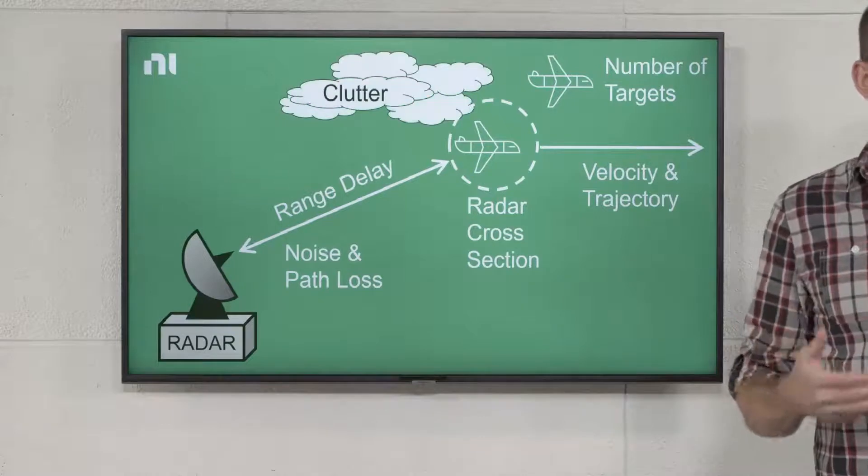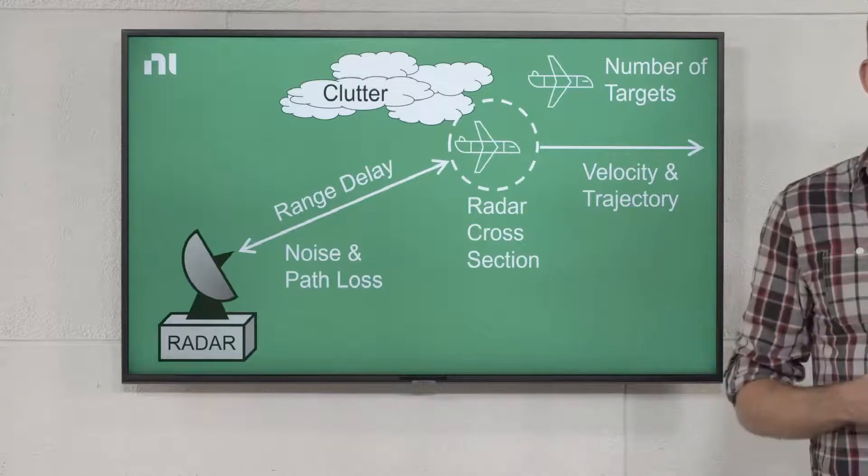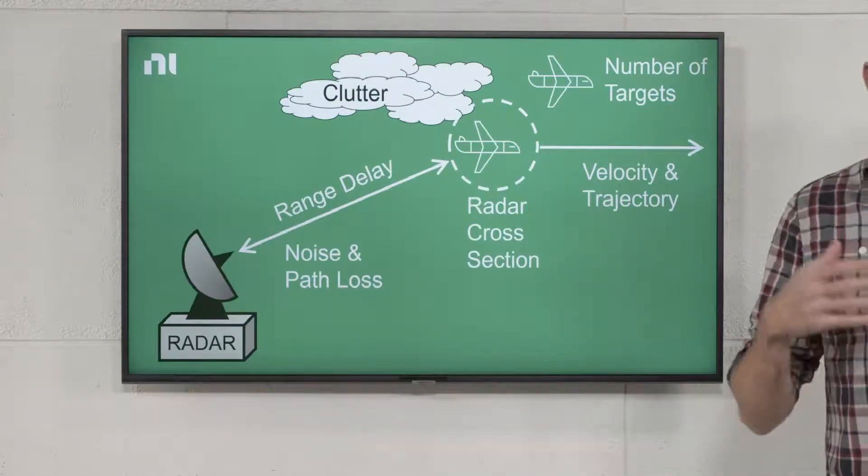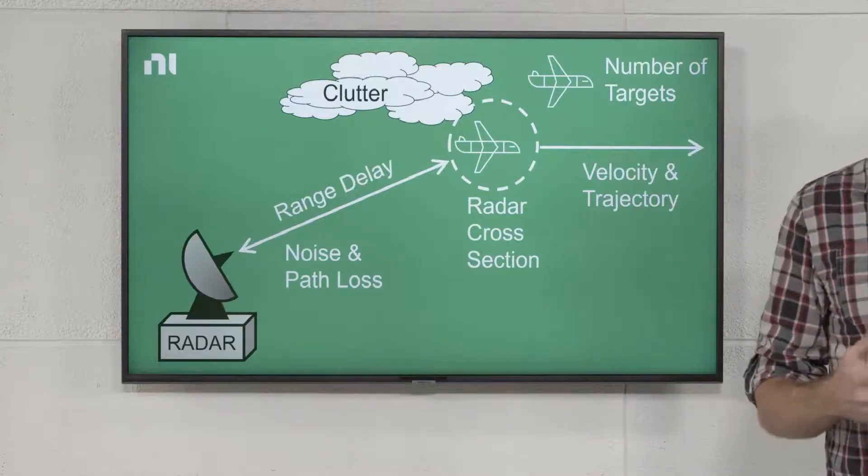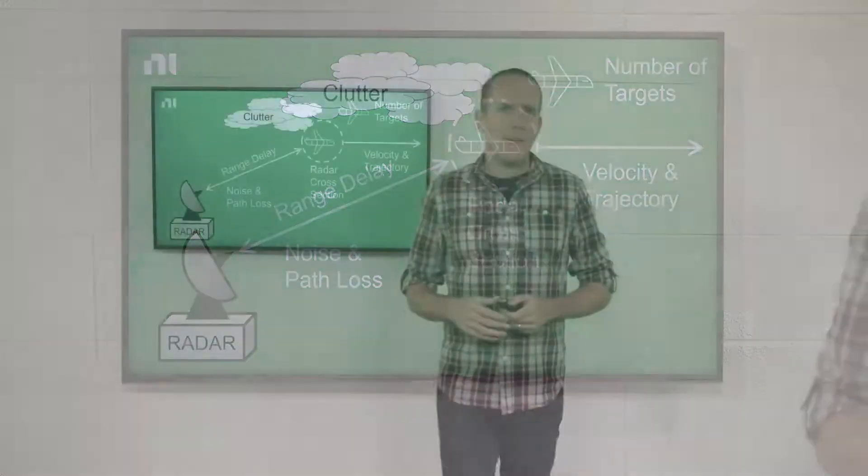We can also simulate sources of clutter, which are other things in the environment that can bounce energy around and back towards the radar, but are not the targets we're trying to detect. Those are things like clouds or nearby terrain features. This scene is already getting pretty busy, so we'll stop there for now.